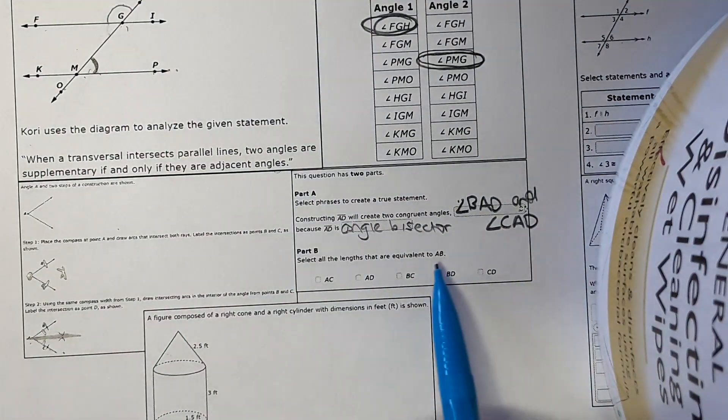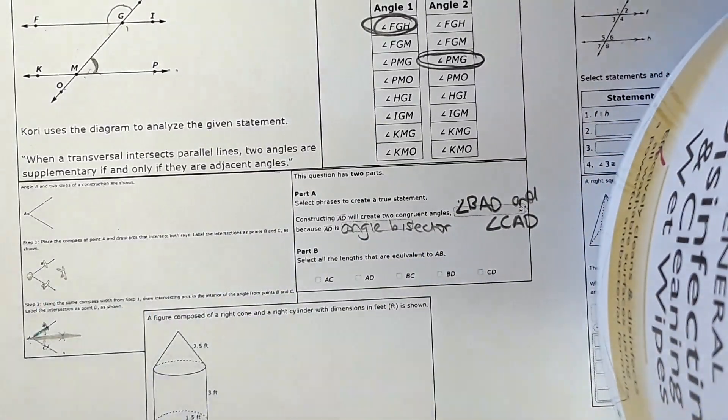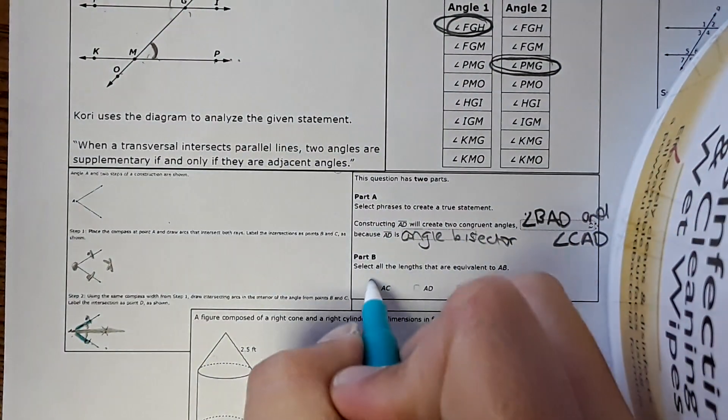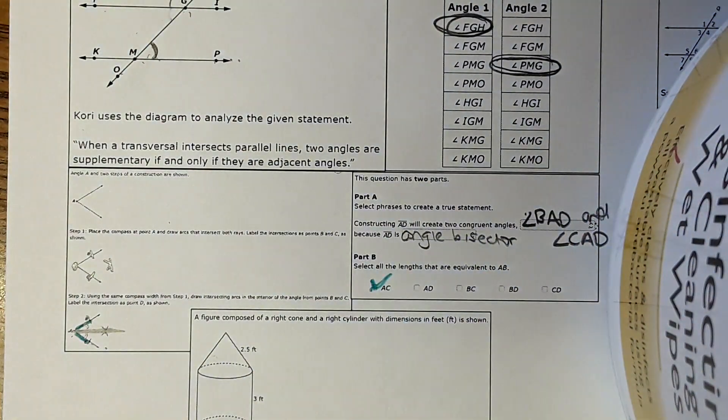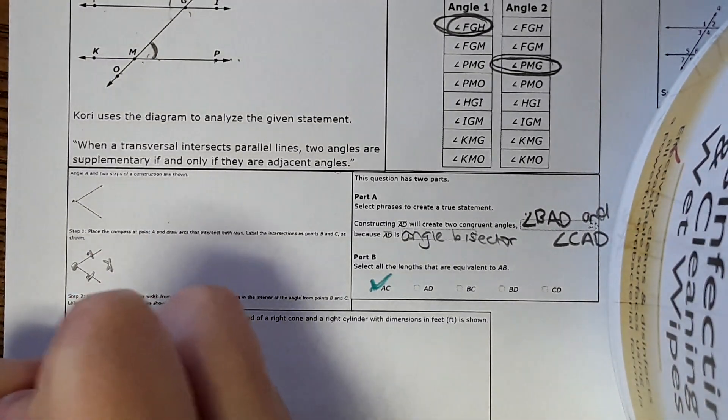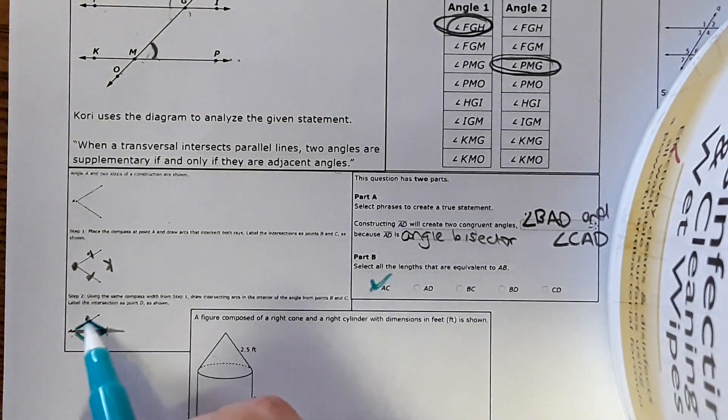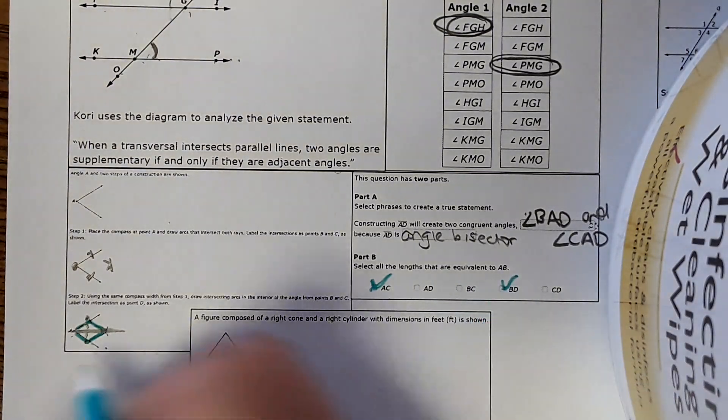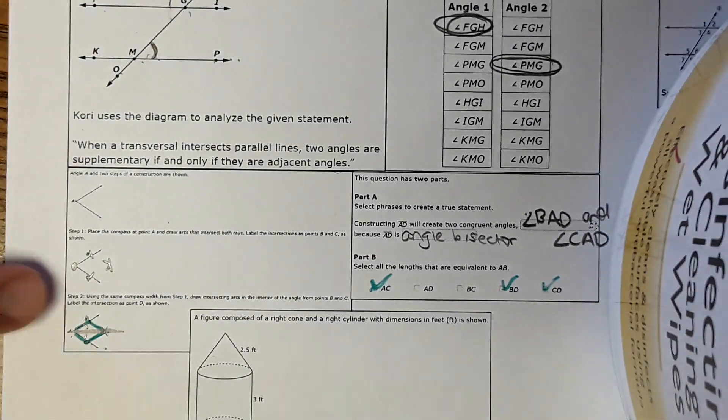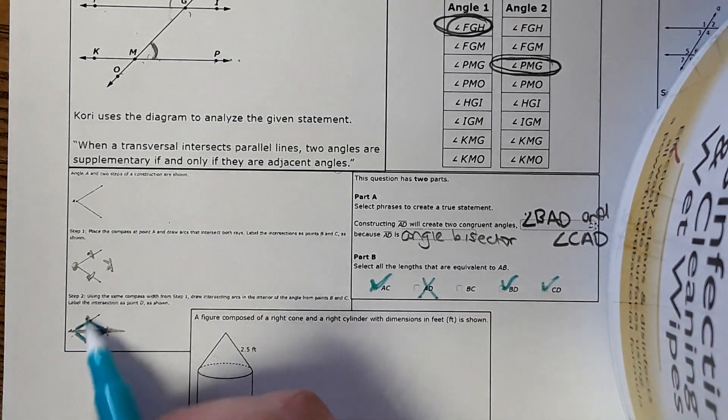Select all the lengths that are equivalent to segment AB. So let's identify segment AB right here. And it's really small. AC would also be equivalent to that. And then they're using the same distance to make this mark. So then this and this would also be equivalent. So BD, and I know it's hard to see because it's small, and CD would also be equivalent. And then AD wouldn't be the same length. And BC, nope.